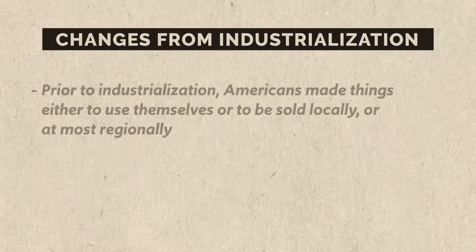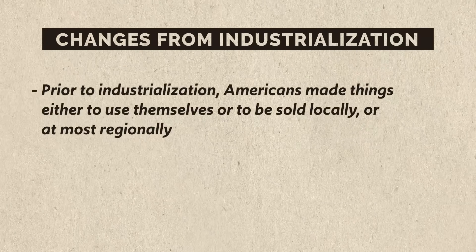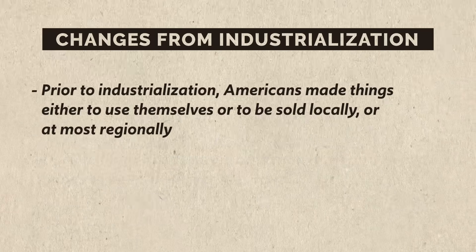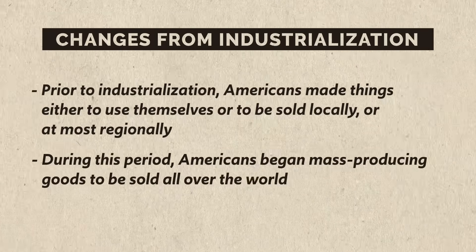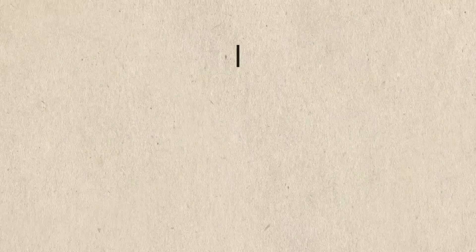During the last few decades of the 19th century, industry in the United States changed significantly. When I say industry, what I mean is basically the way we made things for sale. Prior to industrialization, Americans made things either to use themselves or to be sold locally or at most regionally. During this period, Americans began mass producing goods to be sold all over the world, and that had some significant consequences. But for now, let's just focus on the technology that made such an innovation possible.